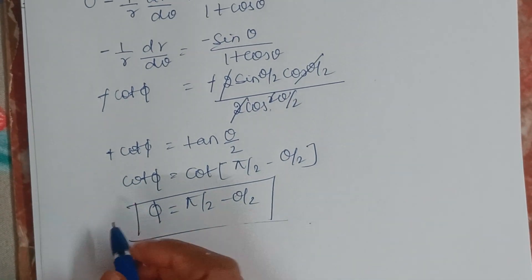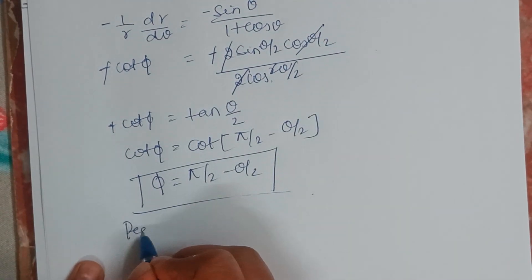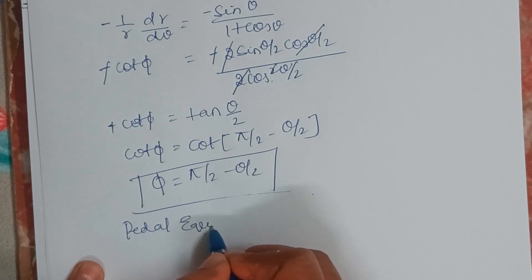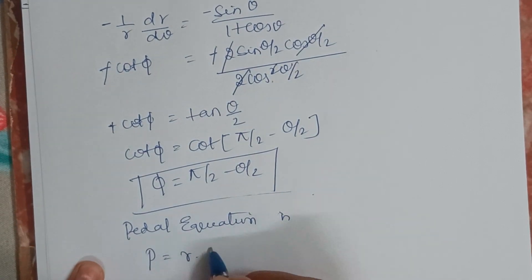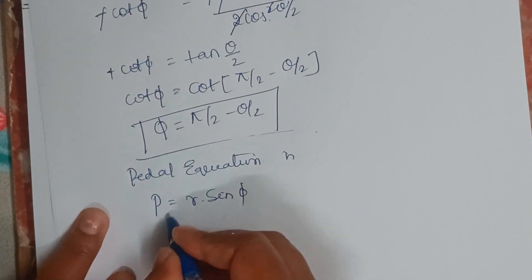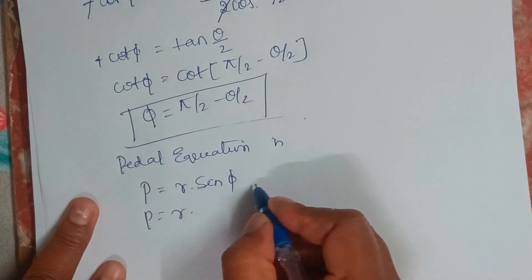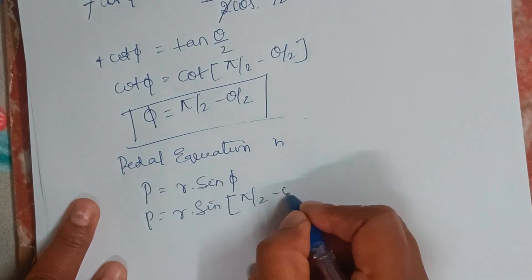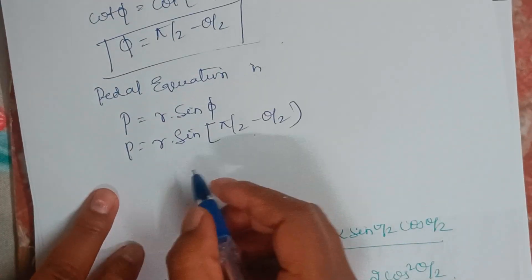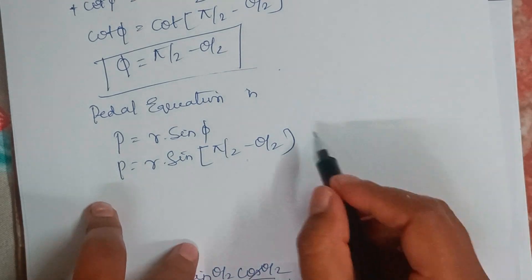Now, the pedal equation is P equals R into sin phi. So P equals R into sin, what is the value of phi? Pi by 2 minus theta by 2.